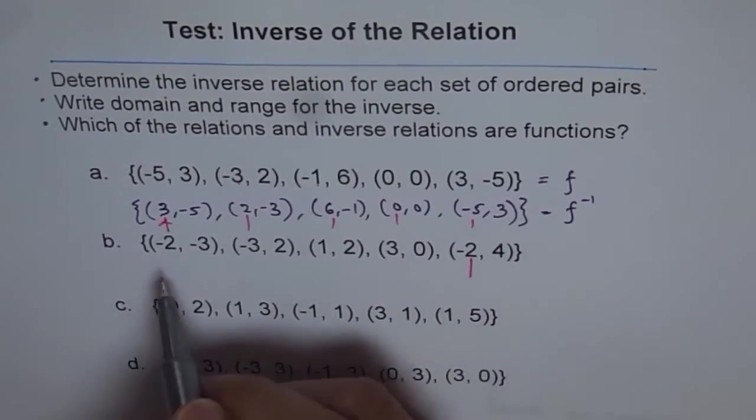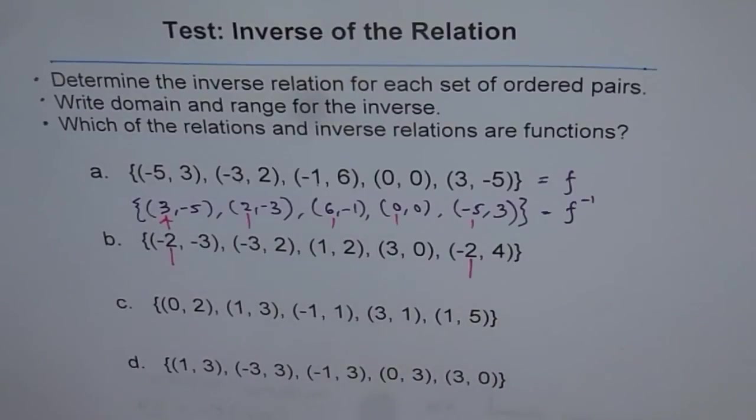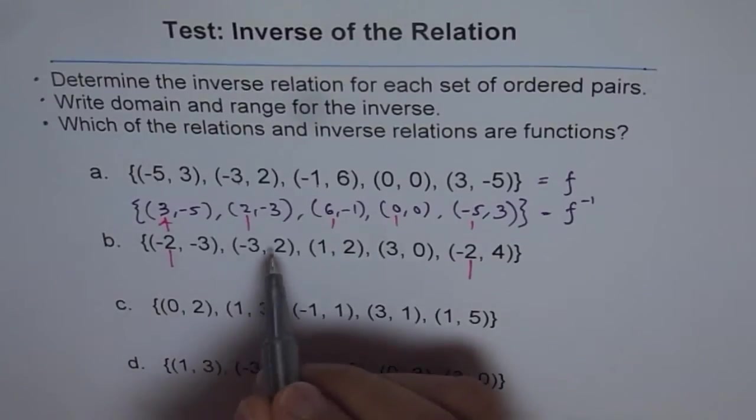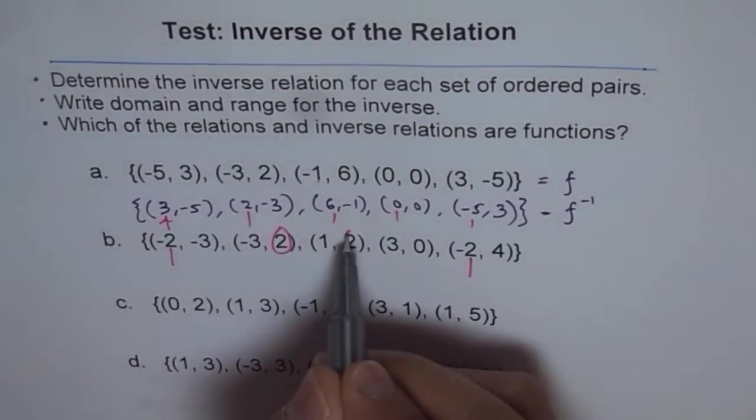For example, here, -2, -2. Therefore, this is not a function. To figure out whether its inverse will be a function or not, check the y values. If y values repeat, that means they fail horizontal line test. So these are the y values, which are repeating.